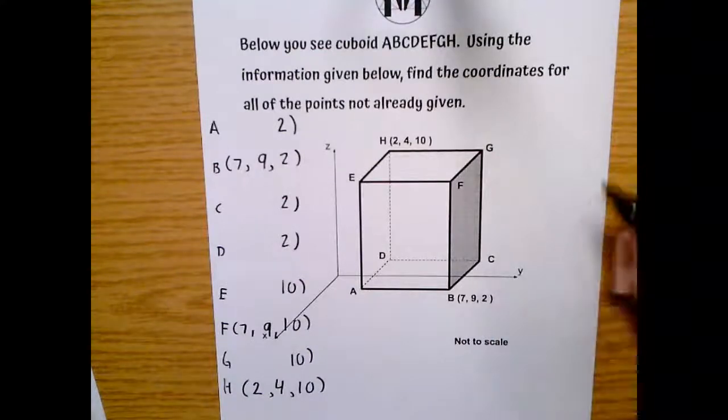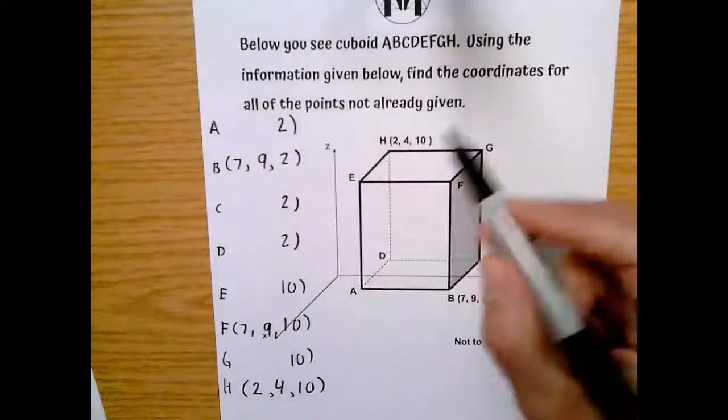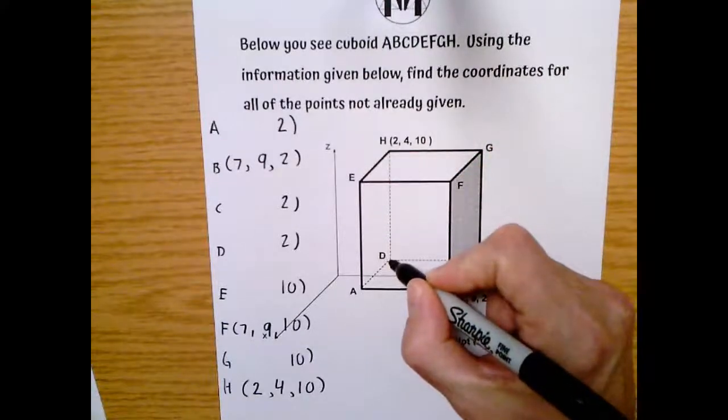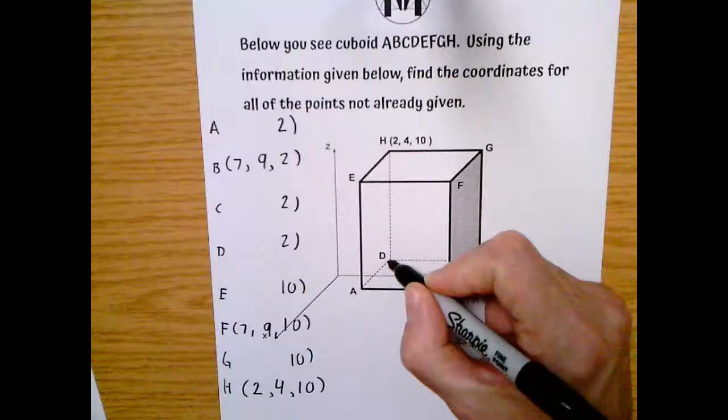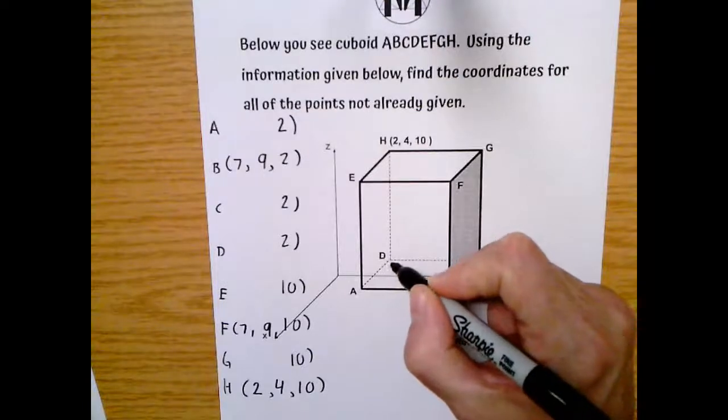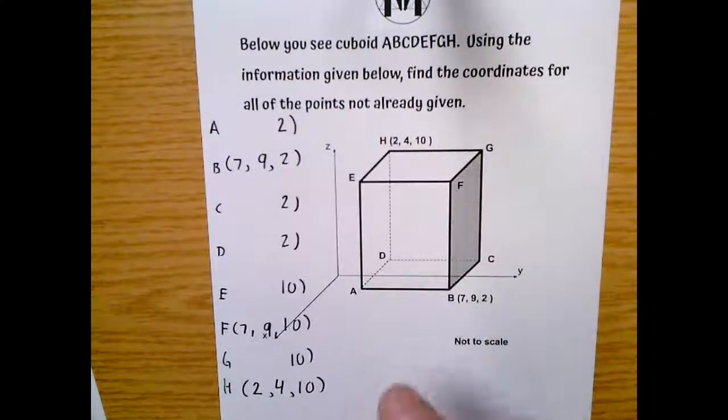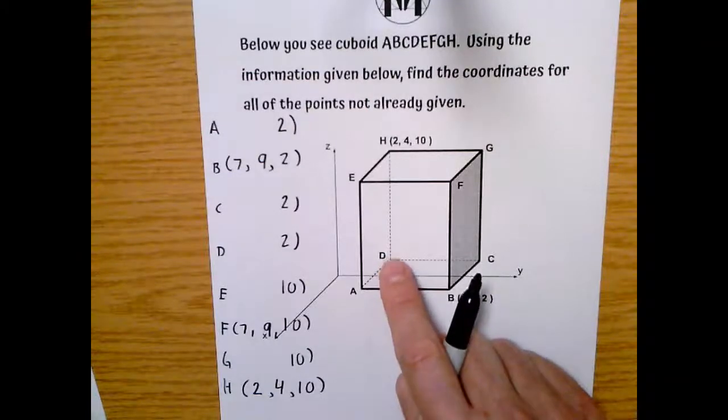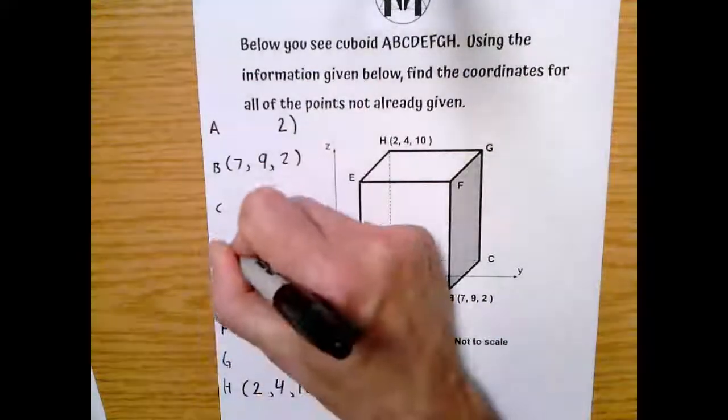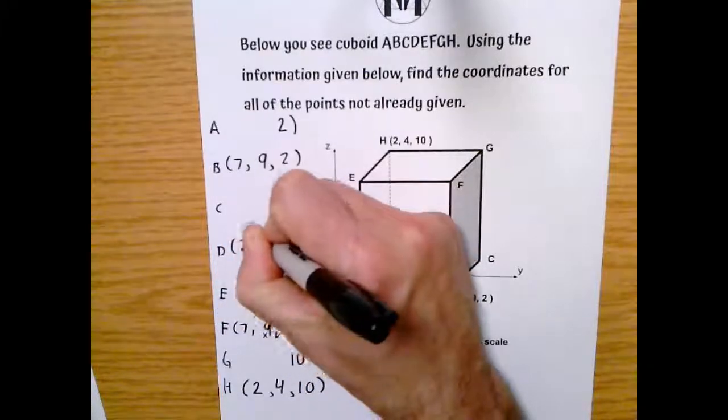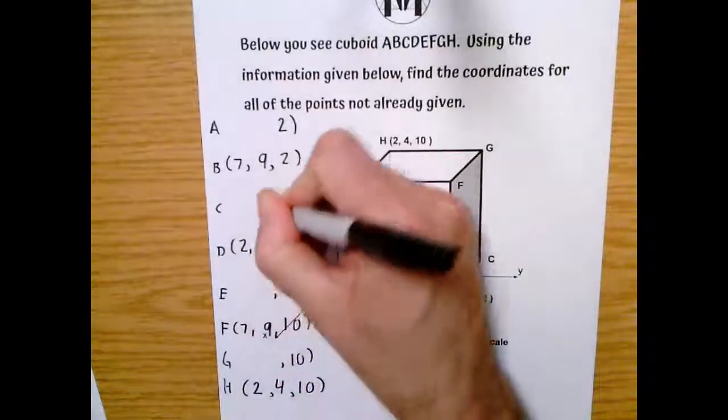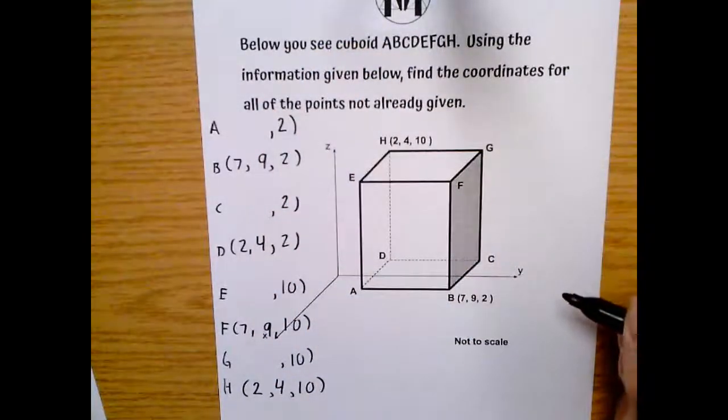And using this logic, let's go to H. We know H is 2, 4, 10, and it's right above D. Well, then we know D, the X is the same, that's 2. The Y is the same, that's 4. And the only thing that's different is the Z because it's down at 2. So this D value would be 2, 4, 2. Now we're cooking.